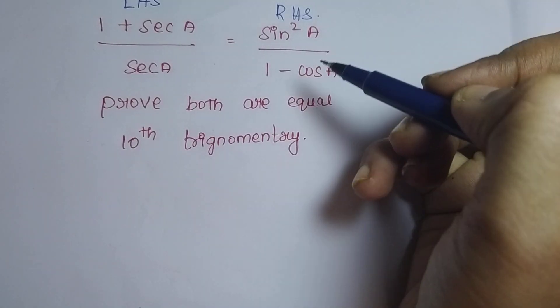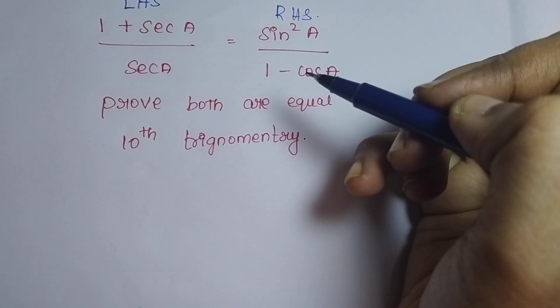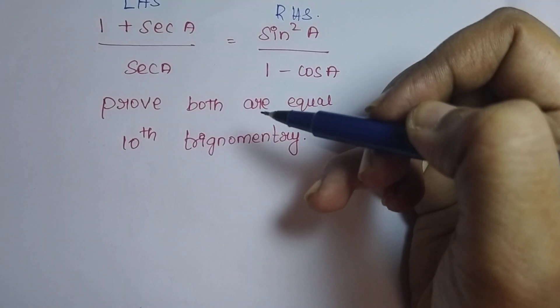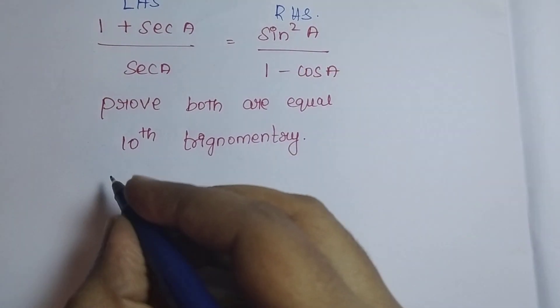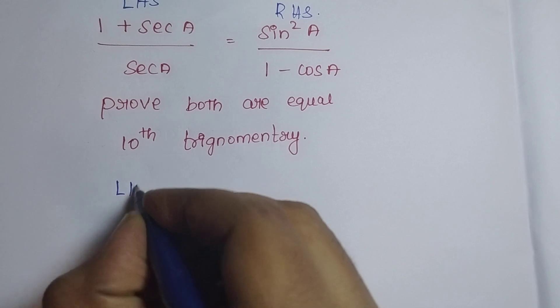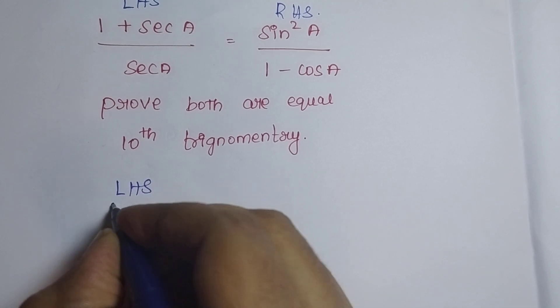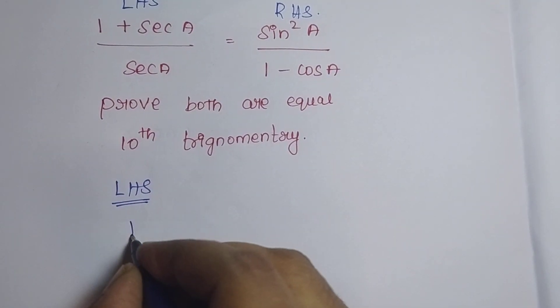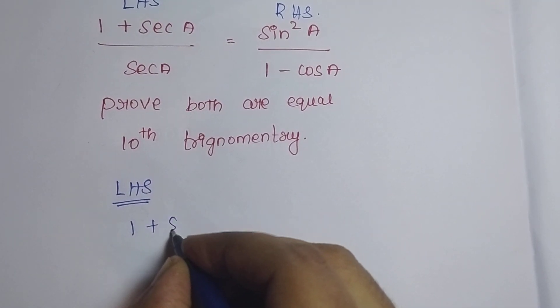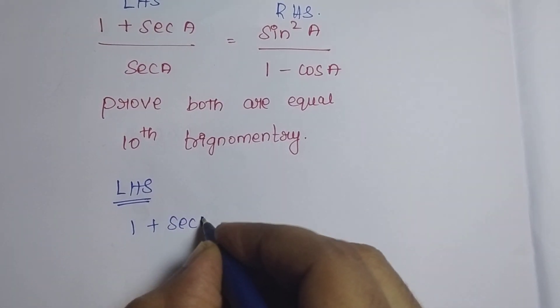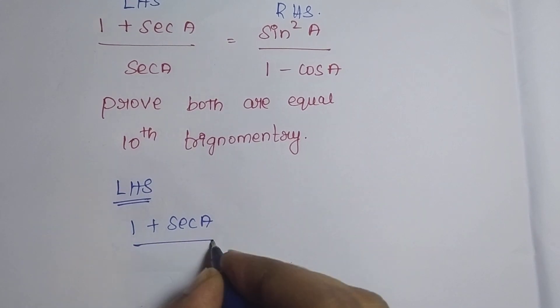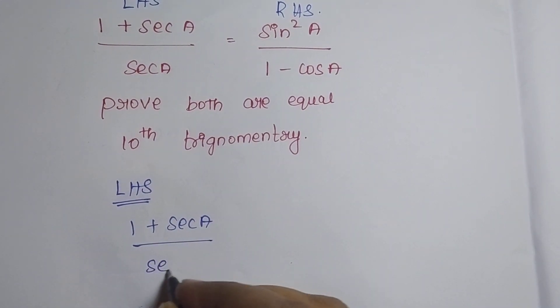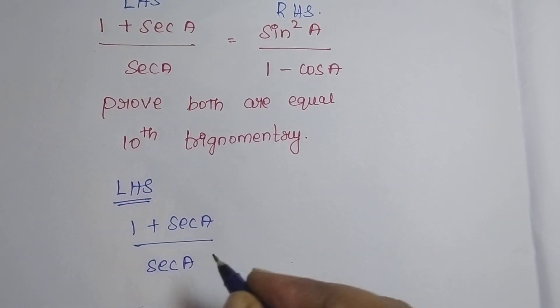Left hand side, right hand side — nothing but LHS, RHS. First I am going to take the LHS side. So LHS is 1 plus secant A divided by secant A.